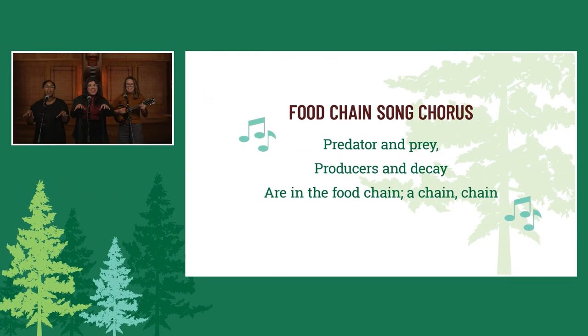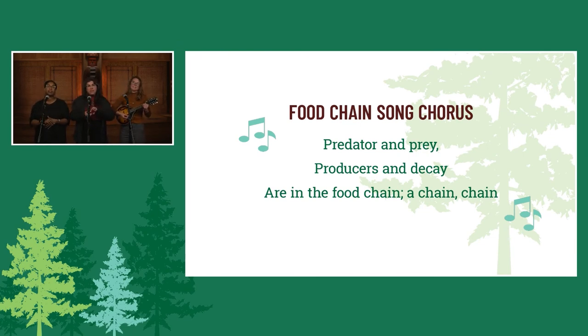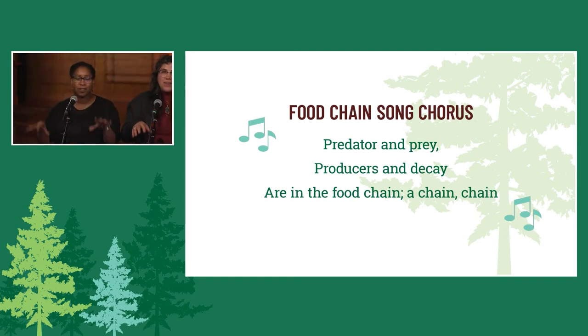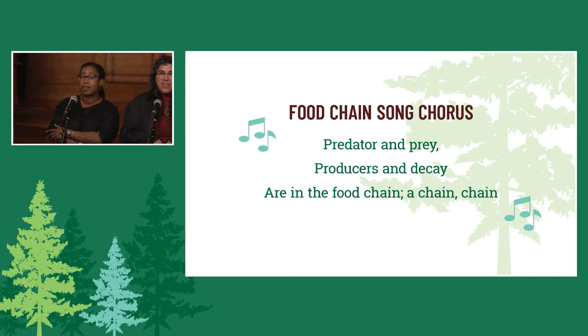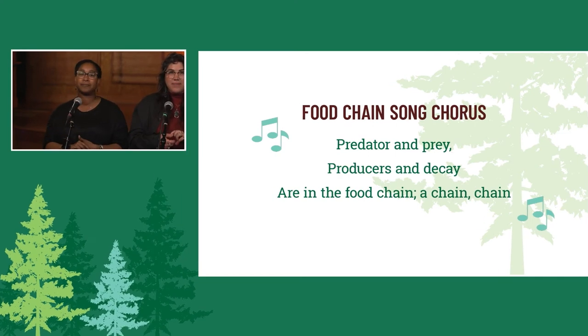Everybody: predators and prey, producers, and decay are in the food chain — a chain, chain. Predators and prey, producers, and decay are in the food chain — a chain, chain. Coyote lifts her tail and scats out on the trail in the food chain — a chain, chain. For insects, that's a deal, 'cause scats are a gourmet meal in the food chain — a chain, chain.